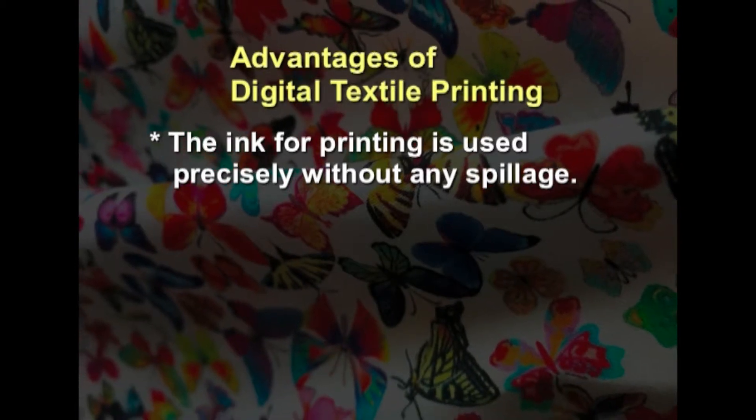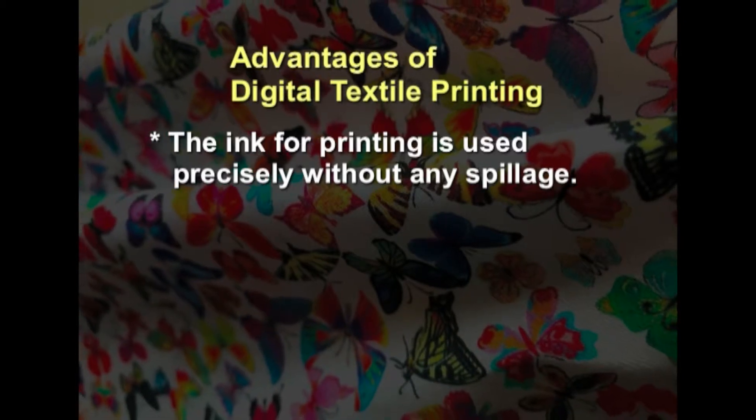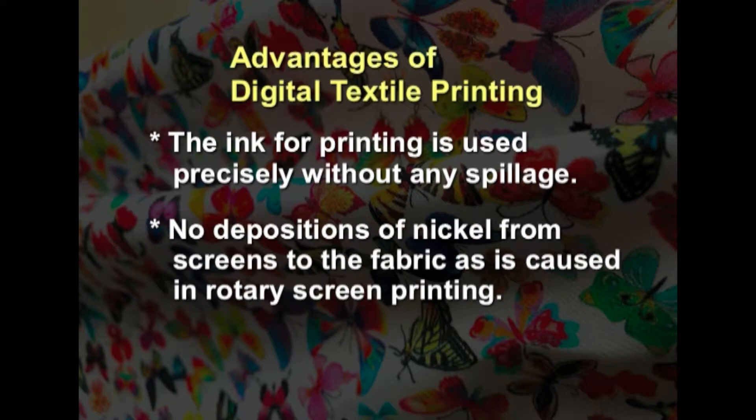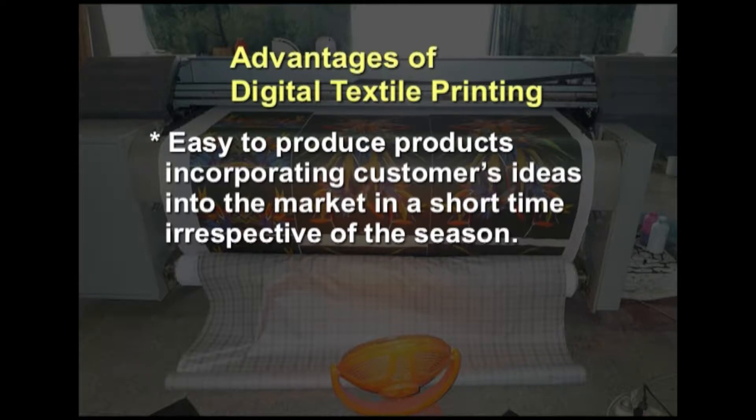In case of screen printed and rotary screen printed textiles, sometimes we need to wash them after the print is made, and even in digital printing it may sometimes be required. But washing of screens and rotary screens takes a lot of water. In digital printing this is avoided, so it is considered an eco-friendly method. The ink for printing is used precisely without any spillage, so there is no wastage. There is no deposition of nickel from screens to the fabric as occurs in rotary screen printing. Digital printing is applicable to a wide range of fabrics.